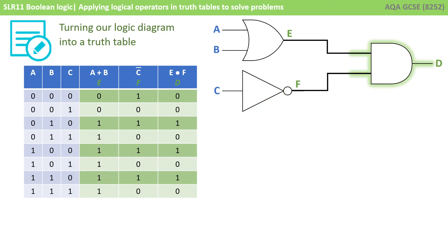We now take the final AND gate, which takes the inputs from columns E and F. Remember, with an AND gate, both inputs E and F have to be one for the output D to be one. And you can see I've filled that out there.